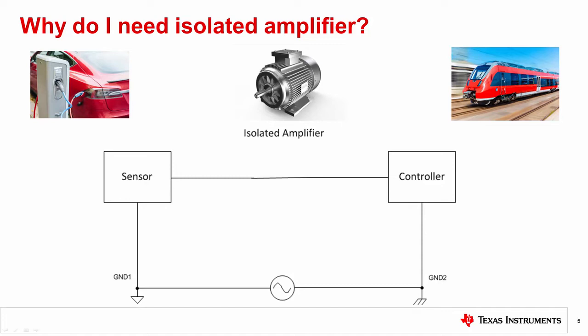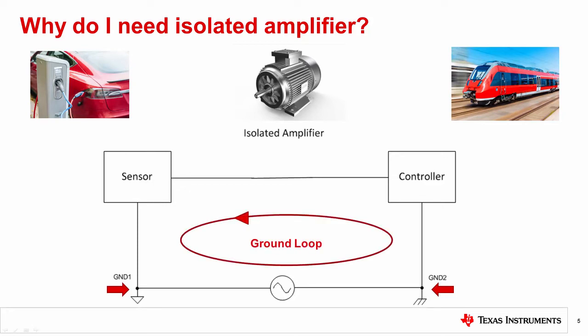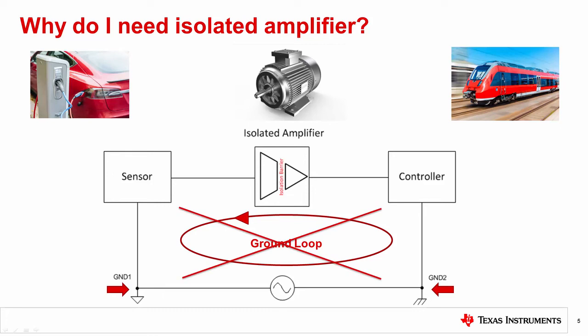Isolated amplifiers are widely used in many industrial and automotive applications, but why are they needed? One common reason for using an isolated amplifier is to break ground loops. Electrical installations can cause large ground potential differences between two remote nodes, ground one and ground two. A direct connection between these two grounds closes the ground loop. Equipment like electric motors can inject large noise currents into the ground, creating a ground loop current that can appear in the signal path. Isolated amplifiers remove the signal path noise from the ground loop and protect the system from ground loop potential difference.